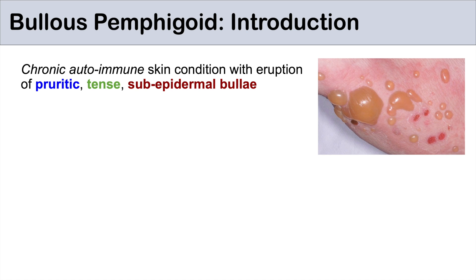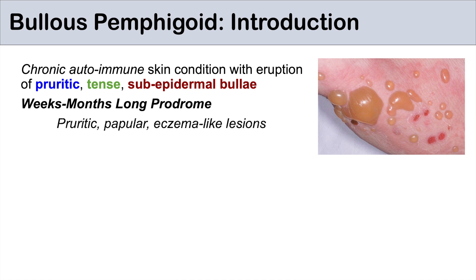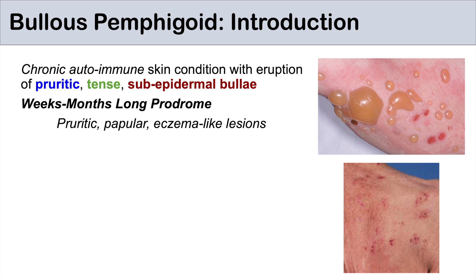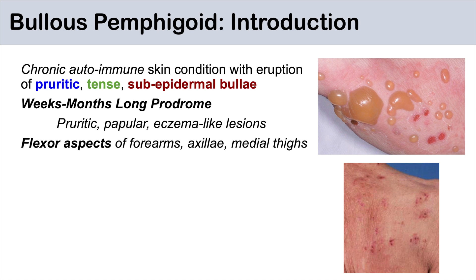Bullous pemphigoid has a weeks-to-months-long prodrome, meaning it takes some time for these bullae to form. It can often start as a pruritic, papular, eczema-like lesion. You might see this type of lesion on an individual who starts scratching, and then all of a sudden it starts to form into bullae — that's bullous pemphigoid. This condition often affects the flexor aspects of the forearms, the axillae, and the medial thighs.